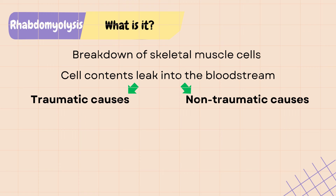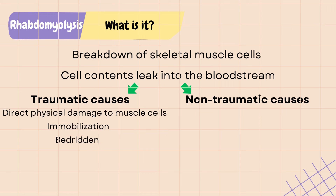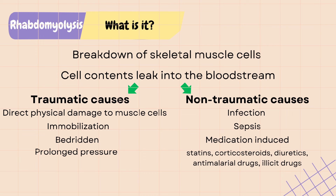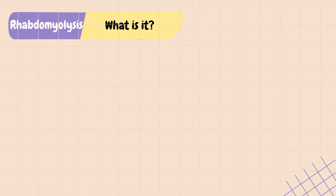The most common causes of rhabdo are trauma such as accidents with direct physical damage to muscle cells, immobilization such as bedridden patients, and patients who undergo prolonged surgeries where prolonged pressure is placed on muscle tissue, leading to tissue damage and ischemia. Non-physical causes include infection and sepsis, in which muscle cells die due to depletion of ATP. Medication-induced rhabdo can result from statins, corticosteroids, diuretics, anti-malarial drugs, and illicit drugs.